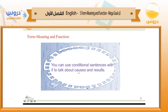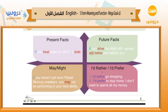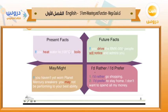Now let's move to form, meaning, and function. You can use conditional sentences with 'if' to talk about causes and results. Today we will deal with conditional sentences in three categories: present facts, future facts, and may or might. We'll also look at 'I'd rather' and 'I prefer' to express preferences.